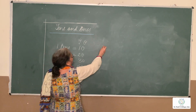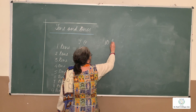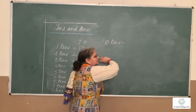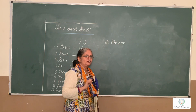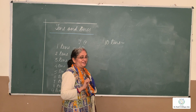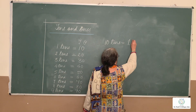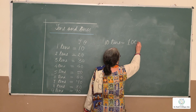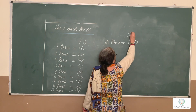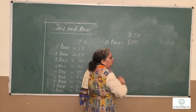In the same way, 10 tens — what does it become? Can you tell? Try. Yes, it becomes 100, means we write H, T and O.